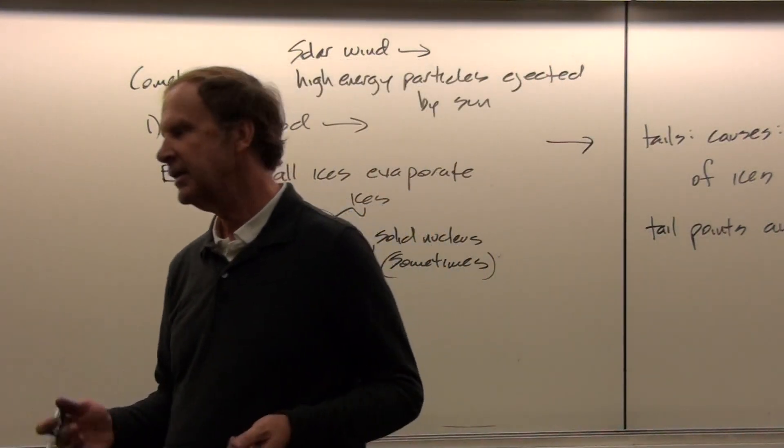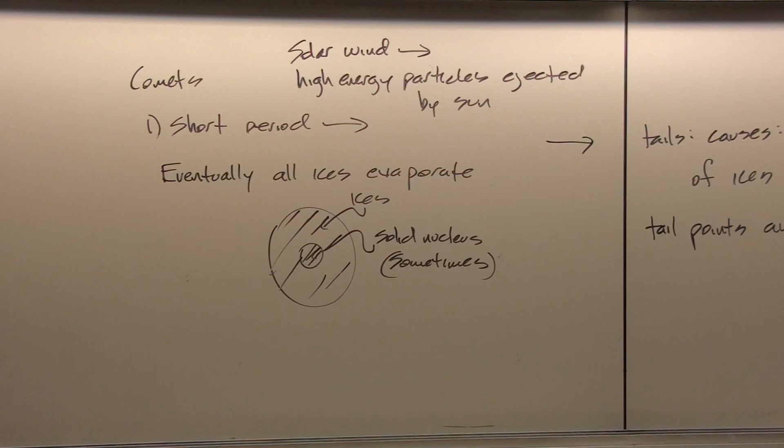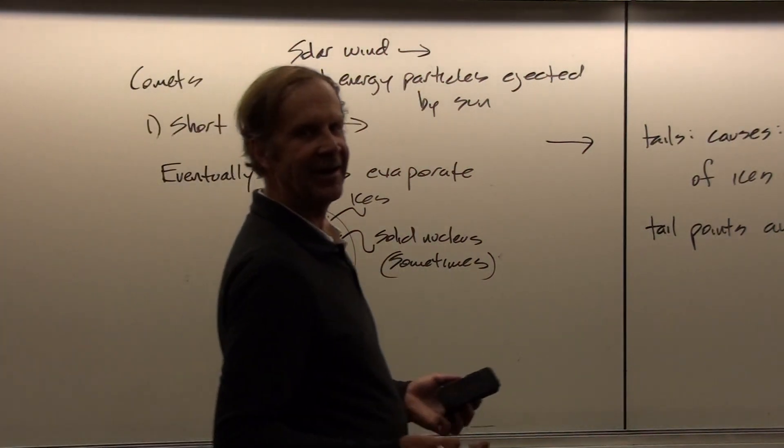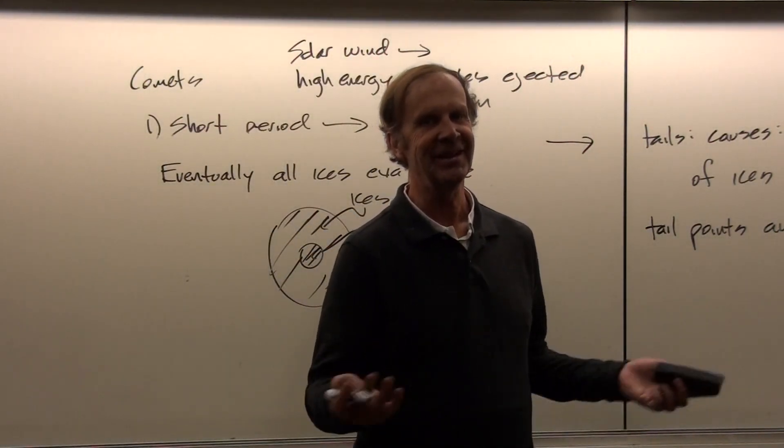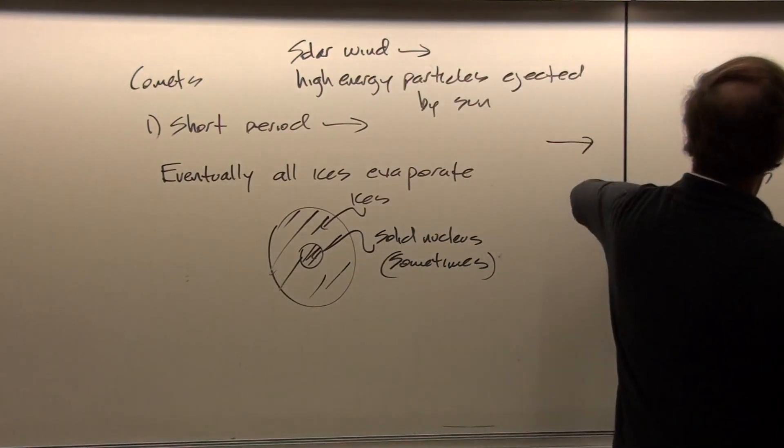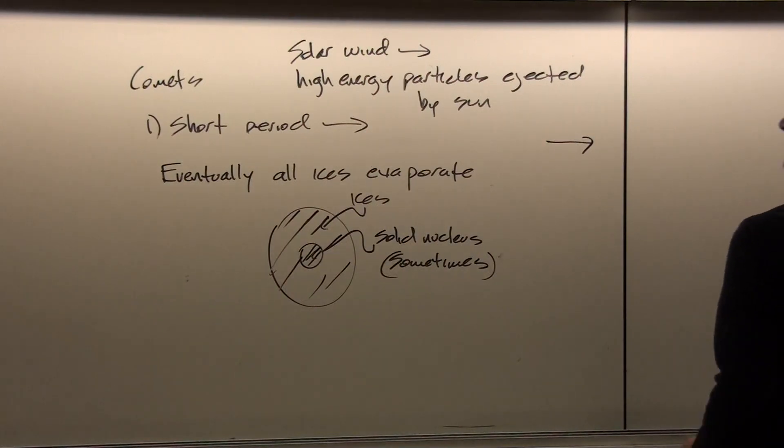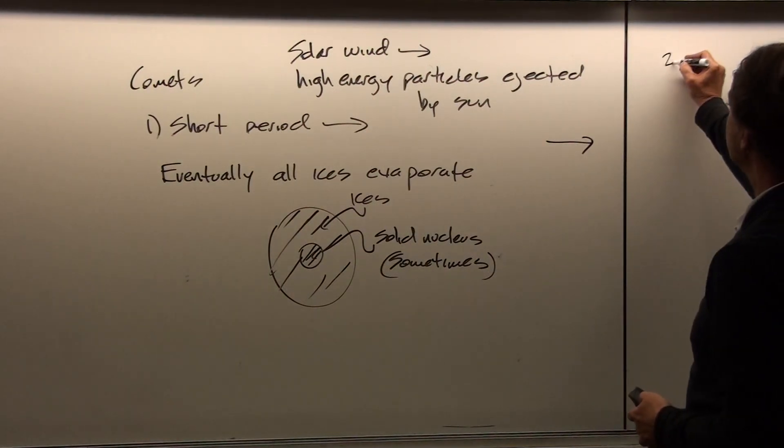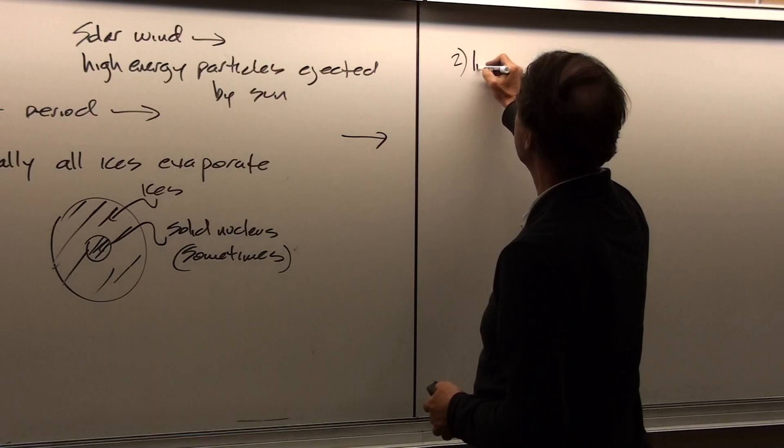Short-period comets tend to disappear because all their ice is evaporating. The question is why do we have short-period comets if they would all be gone after 20 or 30 trips around the sun in just a few thousand years?